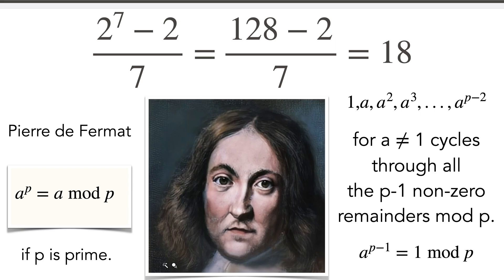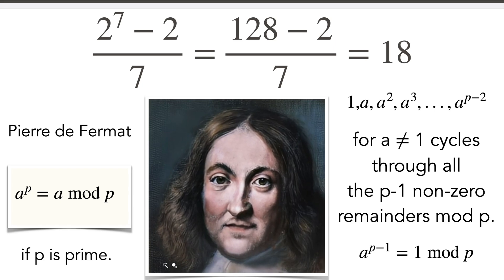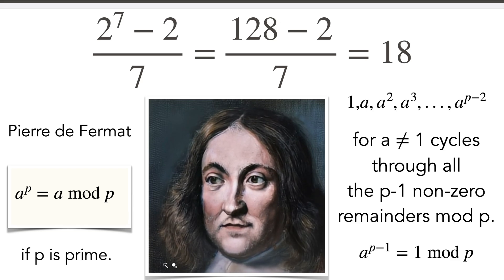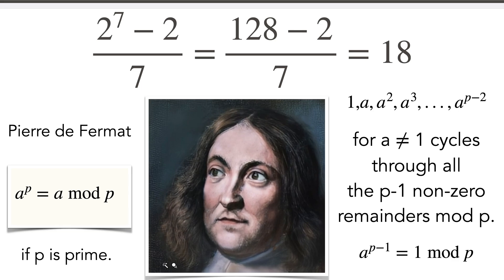The theorem rephrases that in the multiplicative group of non-zero numbers modulo p, any element different from 1 generates the entire group. So here we see Pierre de Fermat who proved that theorem.